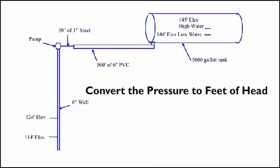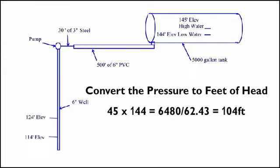You then need to convert the pressure from psi to feet of head. 45 psi is converted to feet of head first by multiplying 45 by 144 and then dividing by 62.43, which is the weight of a cubic foot of water. This comes to 104 feet, so the total is 104 plus 20 or 124 feet for the pump static head at rest.